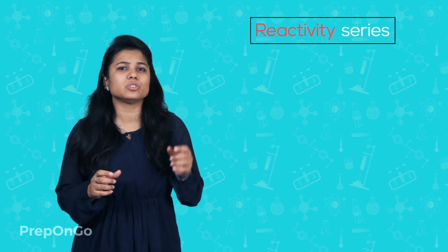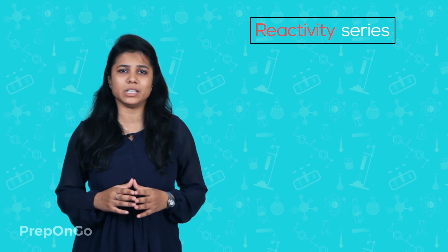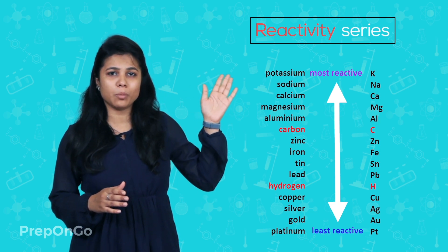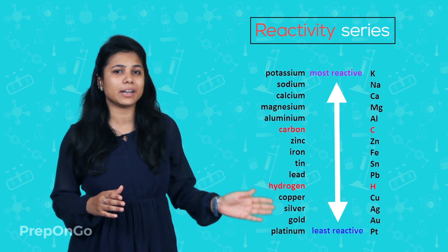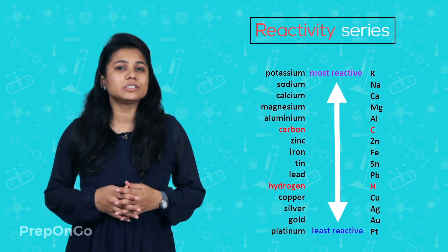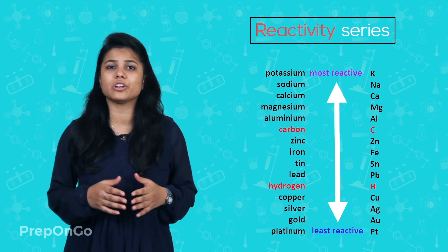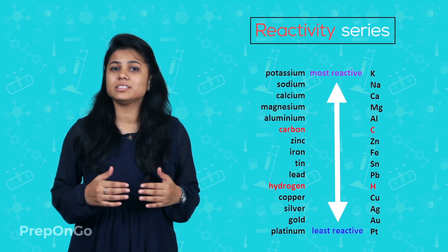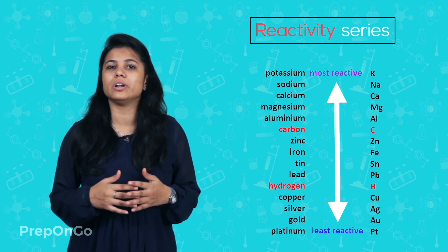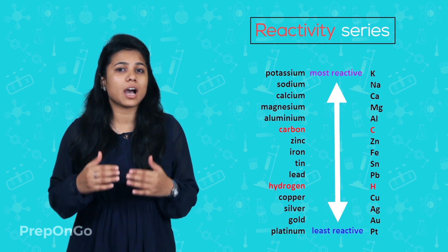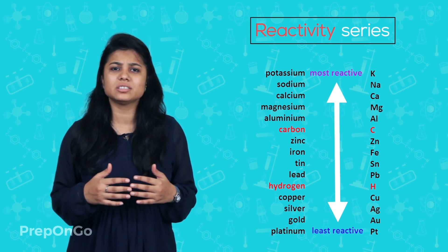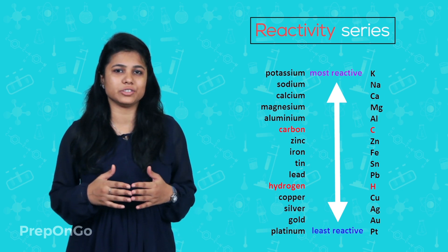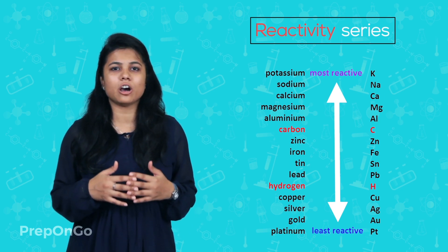The reactivity series is a series which arranges metals on the basis of their reactivity. You can see that sodium and potassium are at the top, while gold, silver and platinum are at the bottom. You can also see hydrogen in the reactivity series, which is a non-metal. The metals lying above hydrogen are more reactive than hydrogen — that is, they can displace hydrogen from its compounds like water and acids. While the metals which are below hydrogen are less reactive than hydrogen and cannot react with water and acids. So, this gave us an idea of the reactivity series.